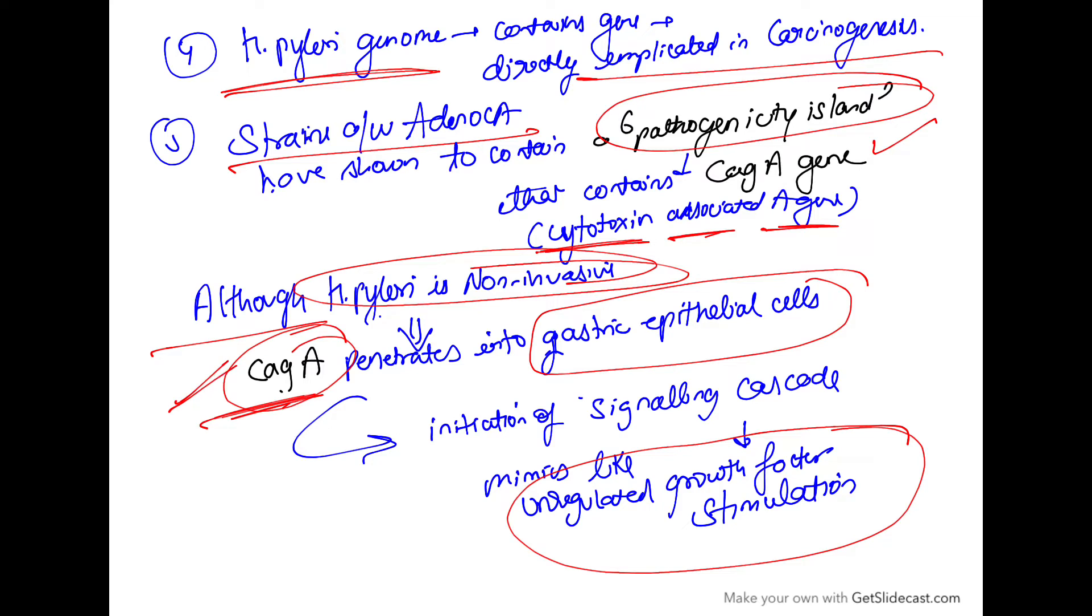So because of this CAG-A gene, there will be a cascade of signaling processes and will mimic as if there is a growth factor stimulation, there is a continuous growth factor stimulation.